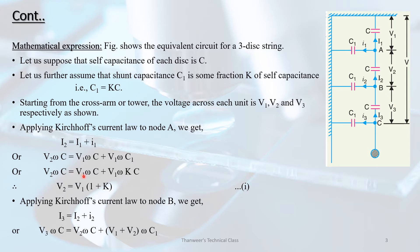Applying Kirchhoff's current law at node A: V2 is equal to V1 into (1 + K). This gives us our first equation relating the voltages across the first and second disk units.